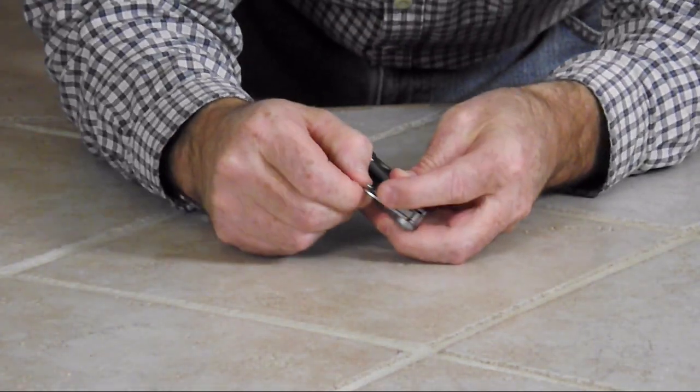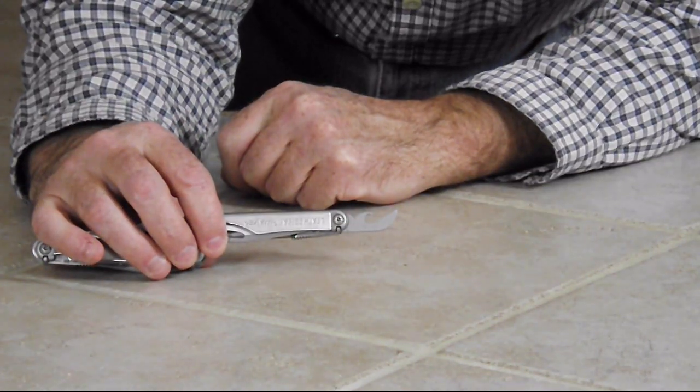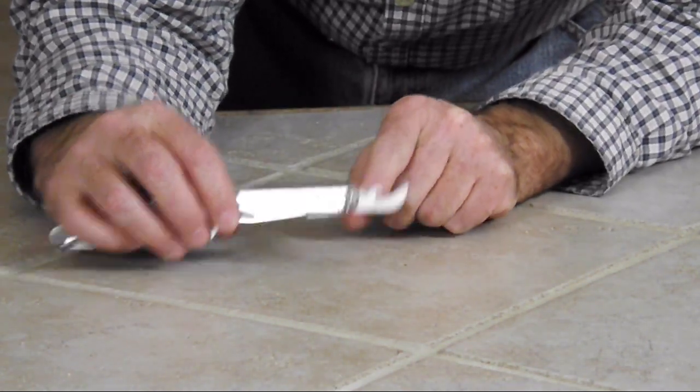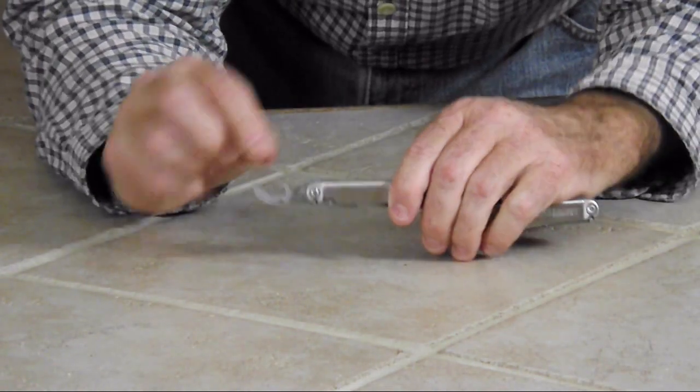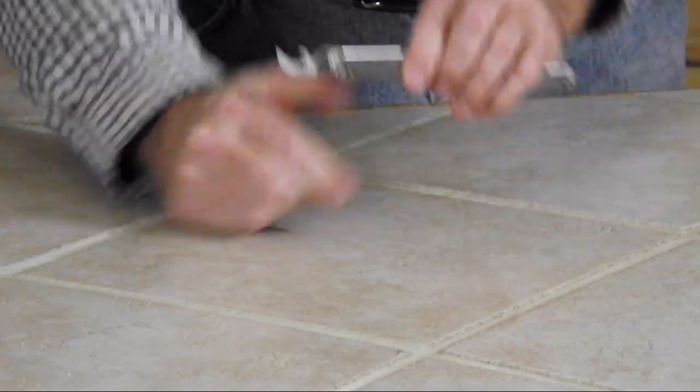It also comes with a bottle opener. See that? And up close, closer to the body, is a wire stripper. Let me show you how well that works.